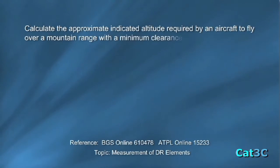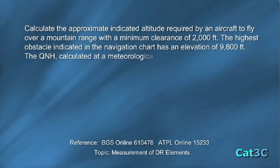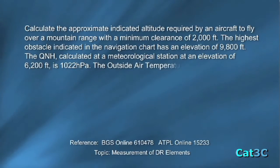The highest obstacle indicated in the navigational chart has an elevation of 9,800 feet. The QNH calculated at a meteorological station at an elevation of 6,200 feet is 1022 hectopascals. The outside air temperature is equal to ISA plus 5 degrees centigrade.